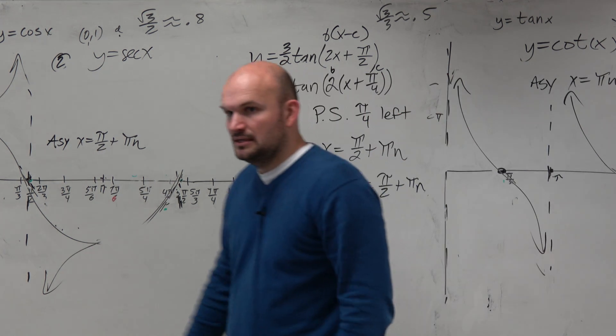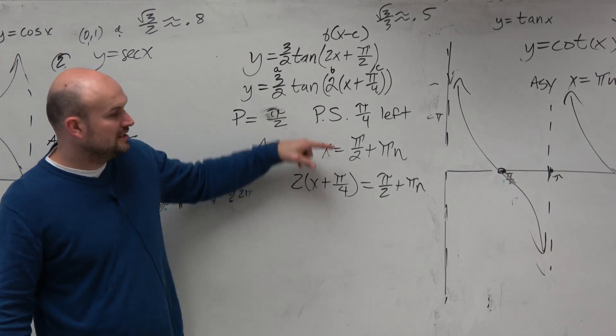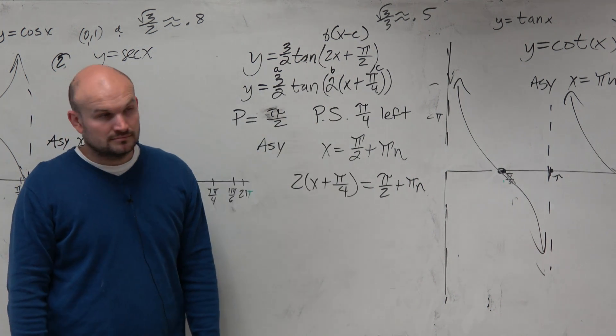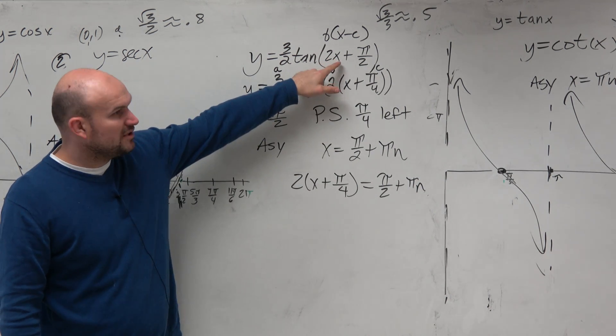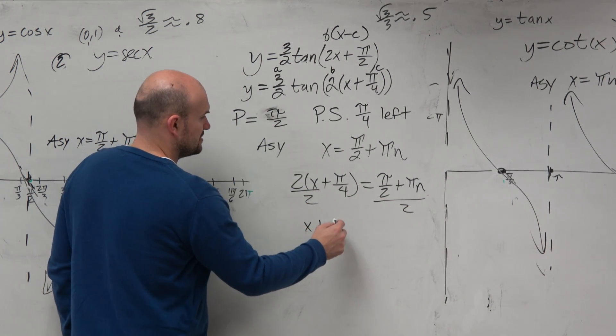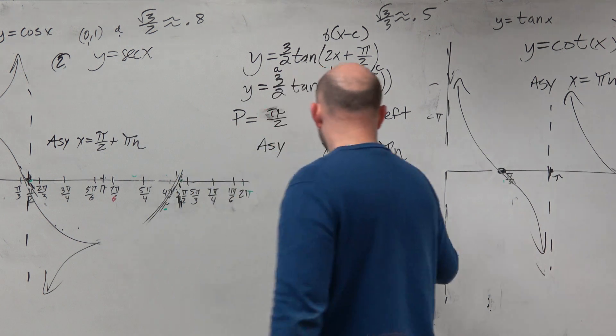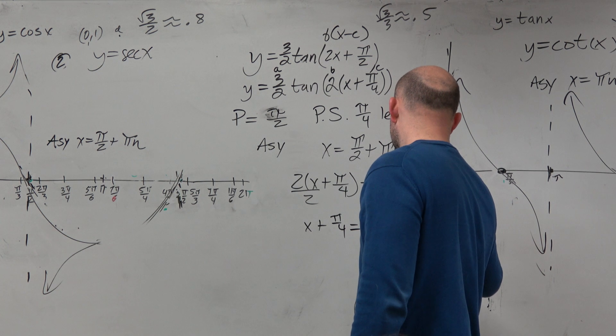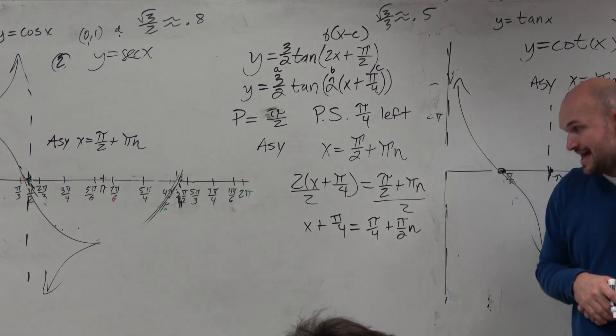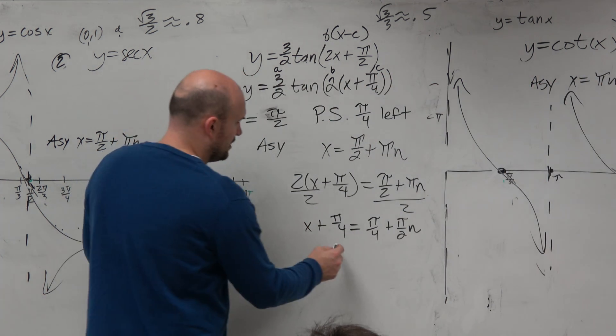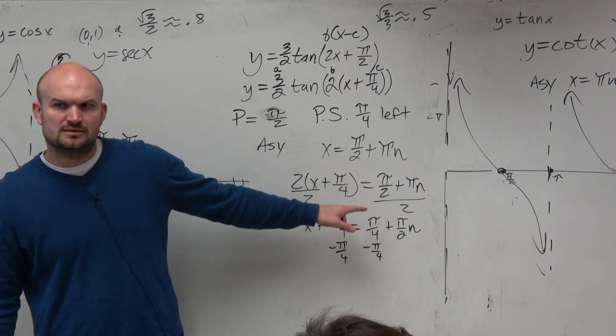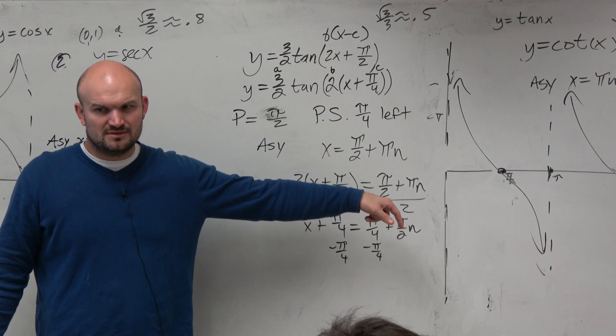Now we just got to solve for x. So these are the changes that happen to x. If x had no changes, your asymptotes would be pi halves plus pi n. But now we multiplied by 2 and added pi halves. So divide by 2. And then we have x plus pi over 4 equals pi over 4 plus pi halves n. And then, to get rid of the pi over 4, I subtract the pi over 4. Should I subtract the pi over 4 to both of them like I divided? Why not?